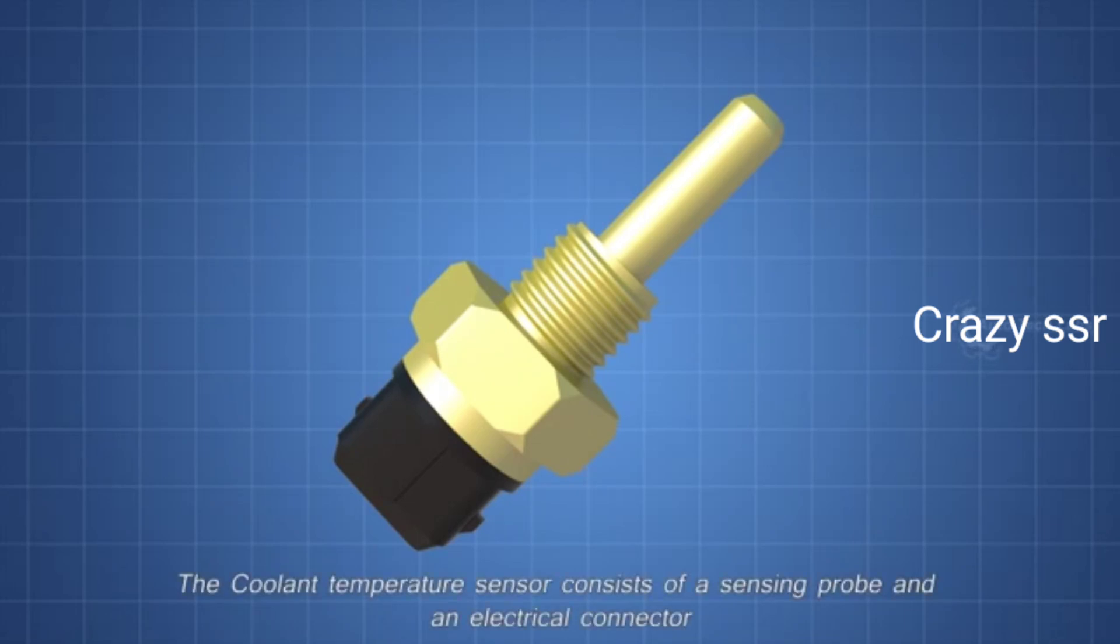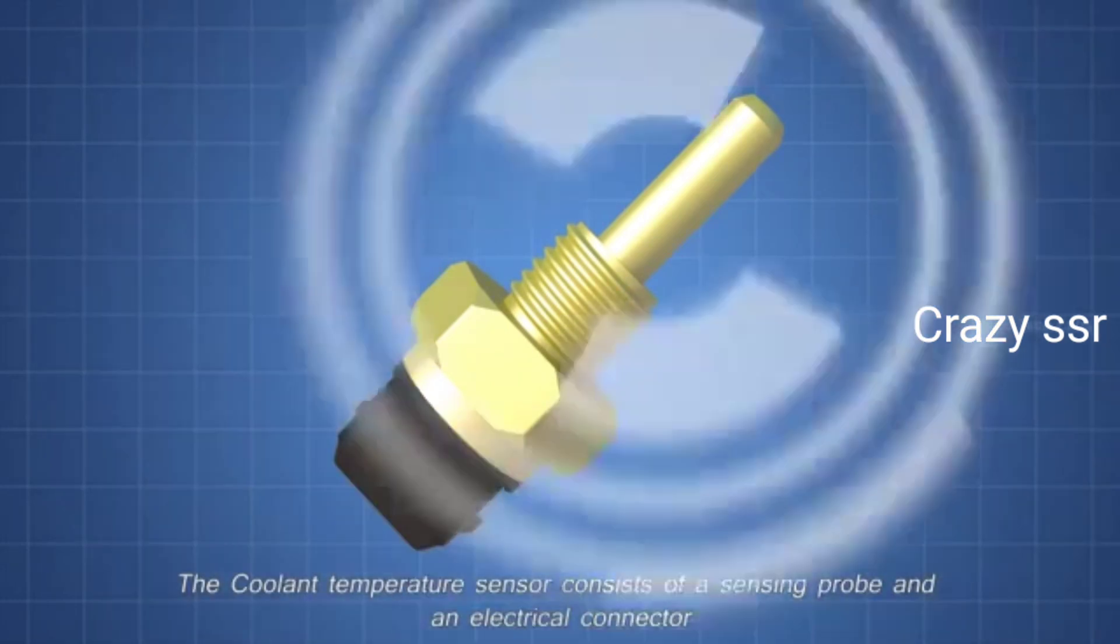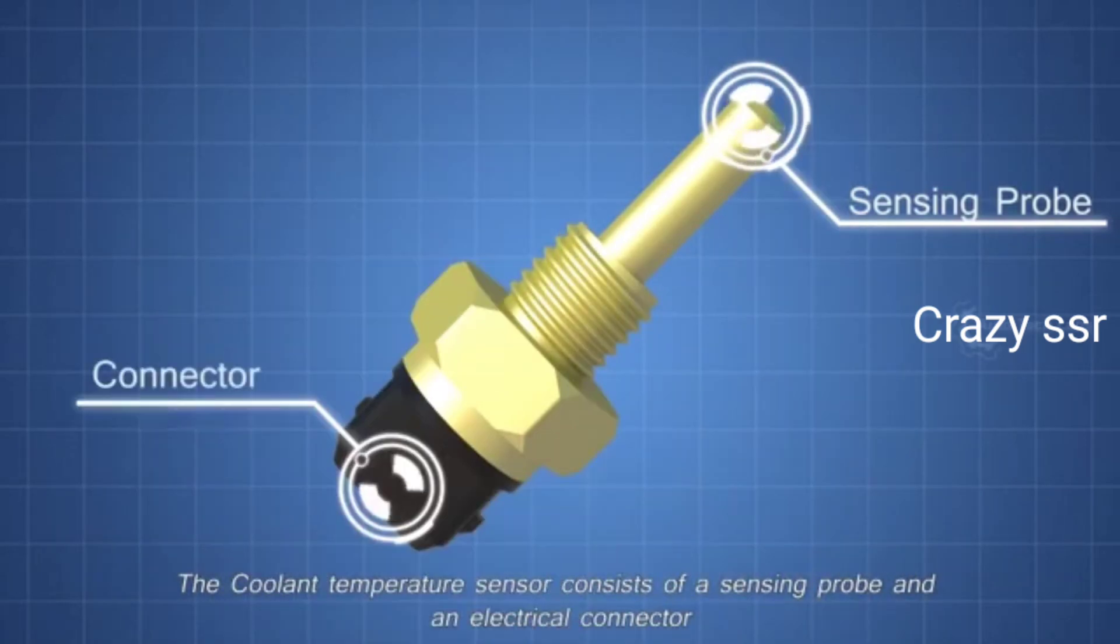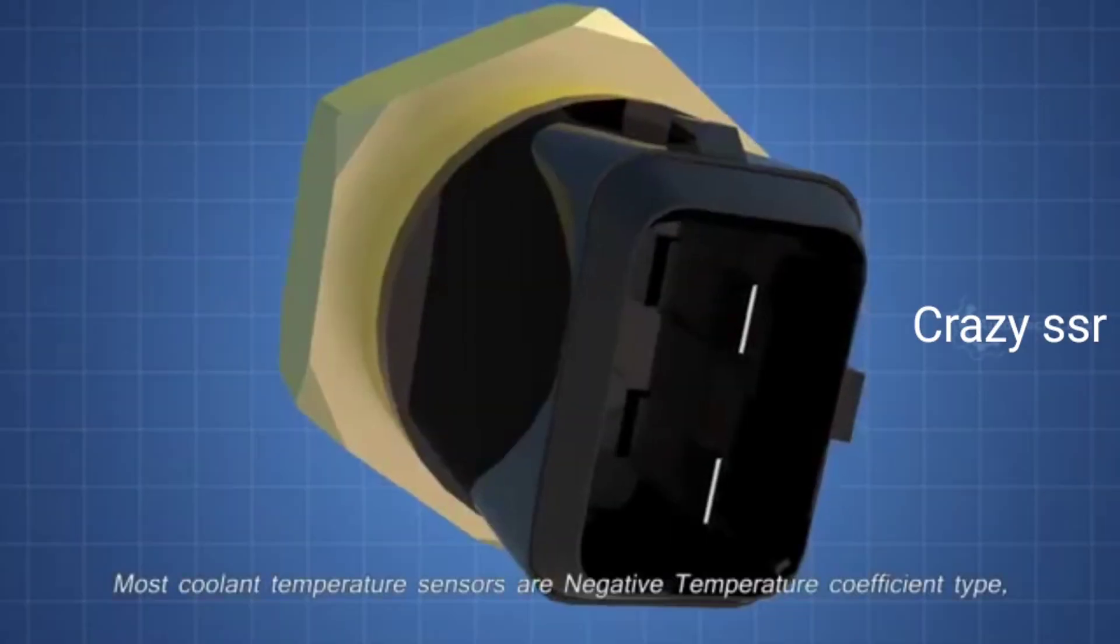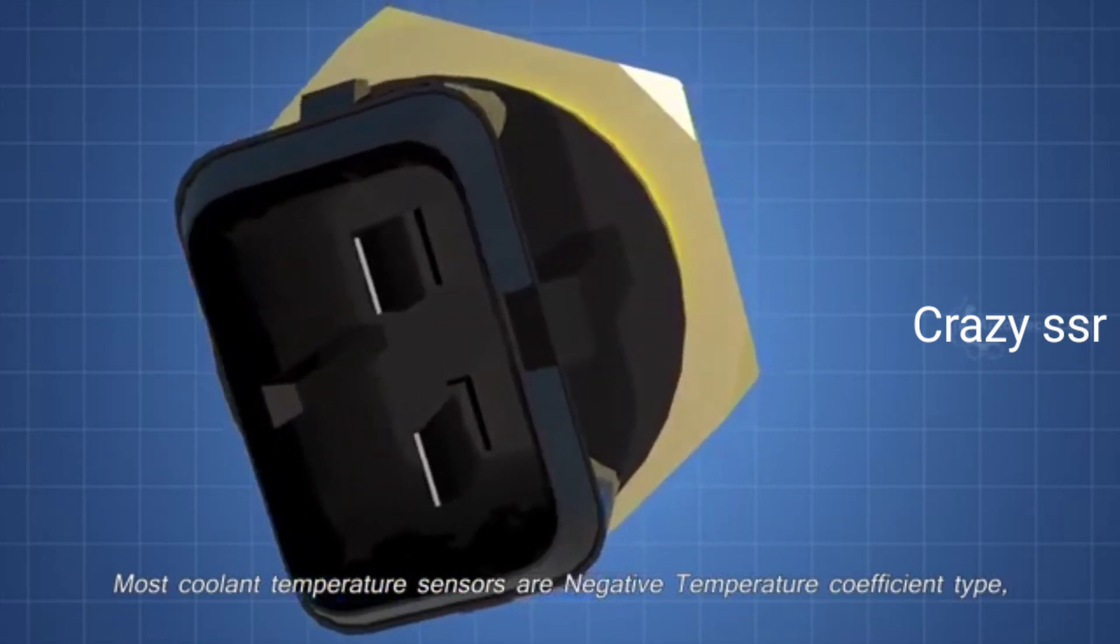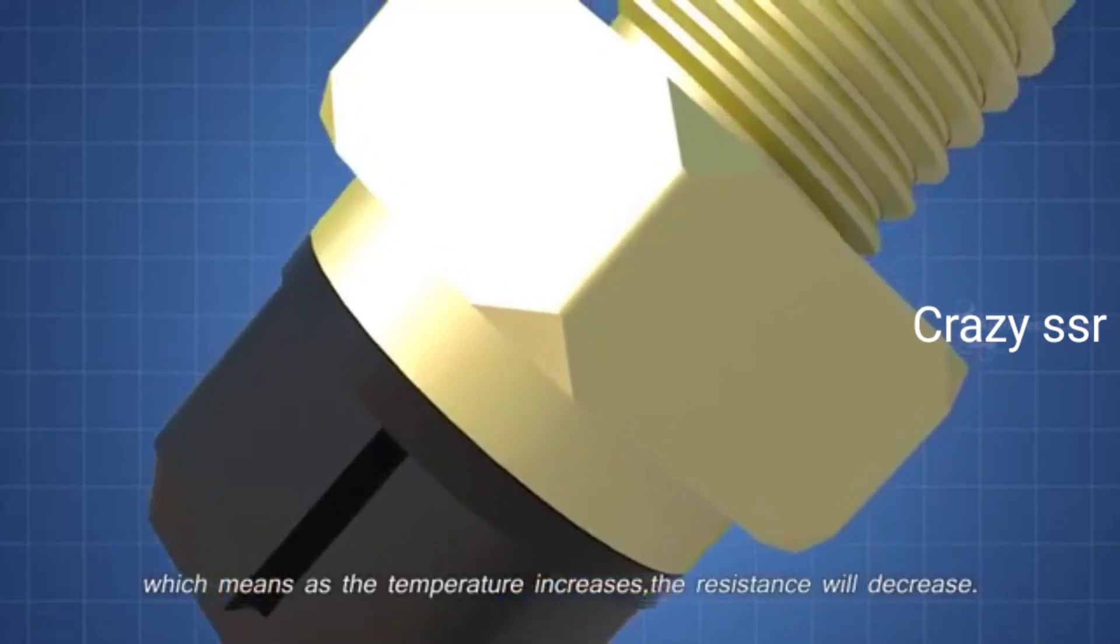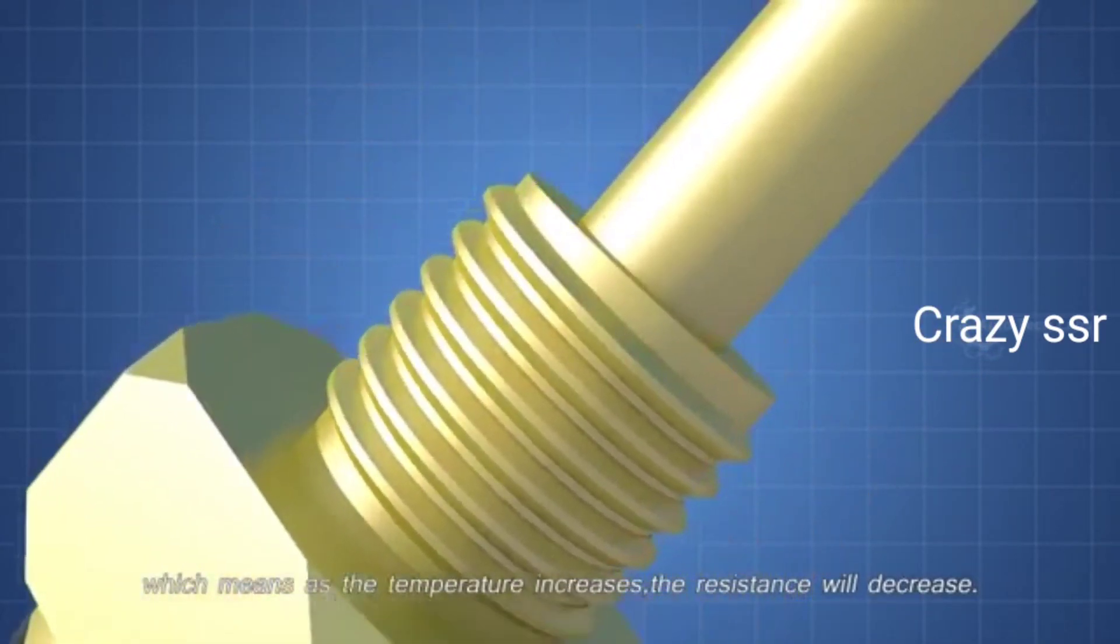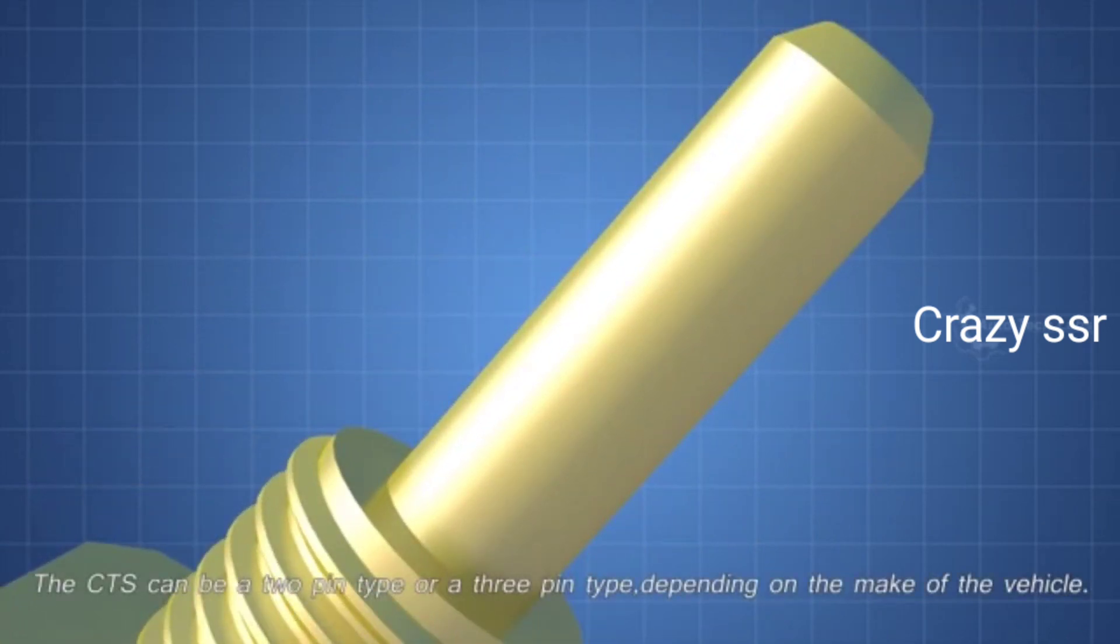The coolant temperature sensor consists of a sensing probe and an electrical connector. Most coolant temperature sensors are negative temperature coefficient type, which means as the temperature increases, the resistance will decrease. The CTS can be a 2 pin type or a 3 pin type, depending on the make of the vehicle.